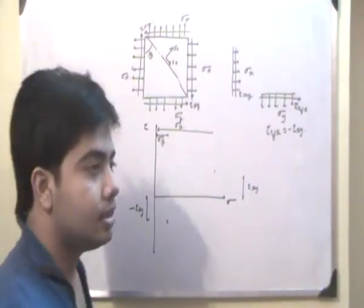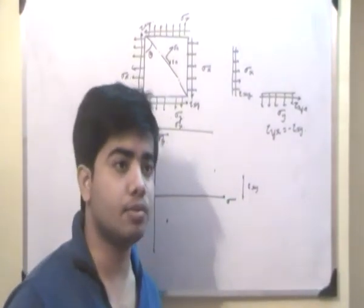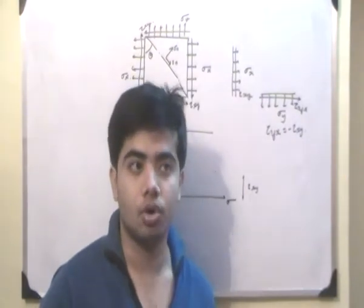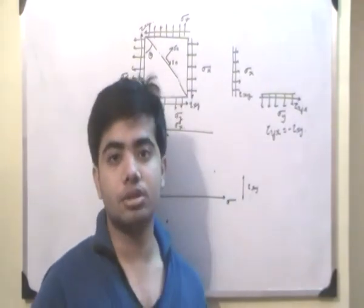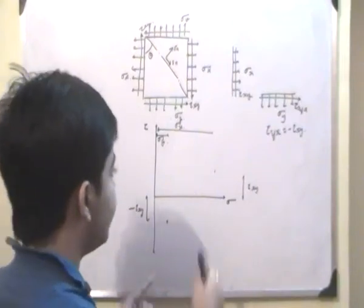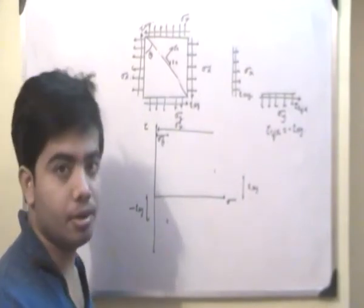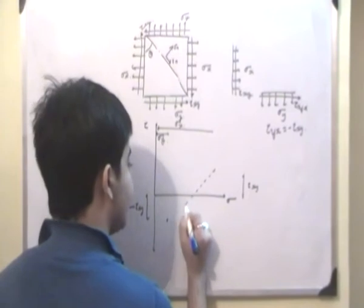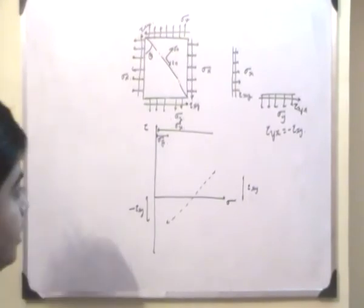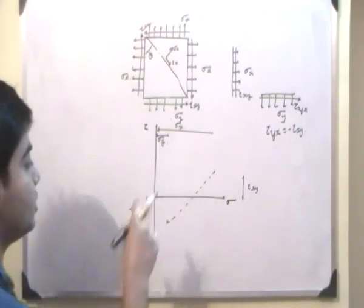Now, as we discussed in the previous lecture, if the principal planes were at an angle of 90 degrees to each other — that is, orthogonal — then the values will differ by 2 theta, which is 2 times 90 degrees, giving 180 degrees. Since the x and y-planes are orthogonal, the values will differ by 180 degrees, so we can join them with a straight line. This straight line represents the x-plane at one end and the y-plane at the other.